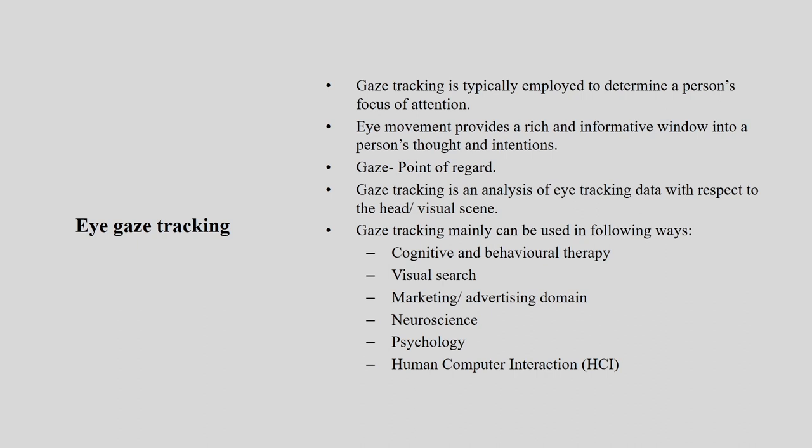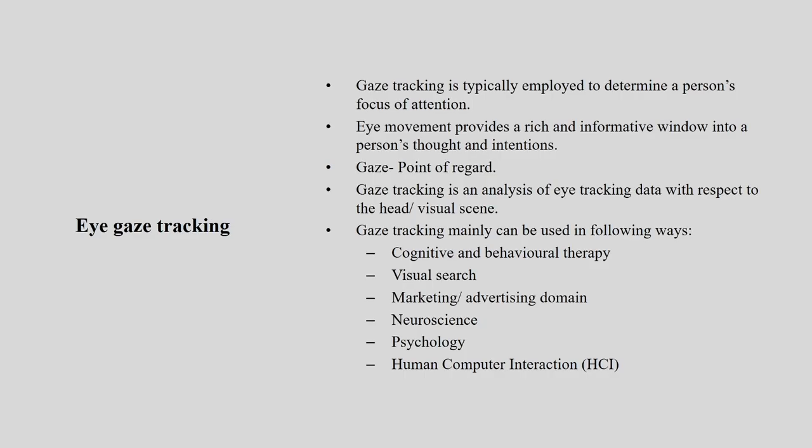What is gaze tracking? Gaze tracking is typically employed to determine a person's focused attention. Gaze means you are looking at an object with concentration — focused attention. Eye movement provides a rich and informative window into a person's thoughts and intentions. Gaze is the point of regard. Gaze tracking is an analysis of eye tracking data with respect to head and visual sense.